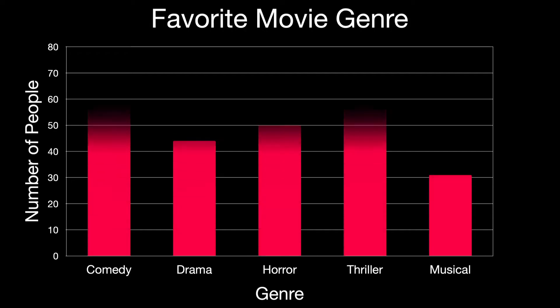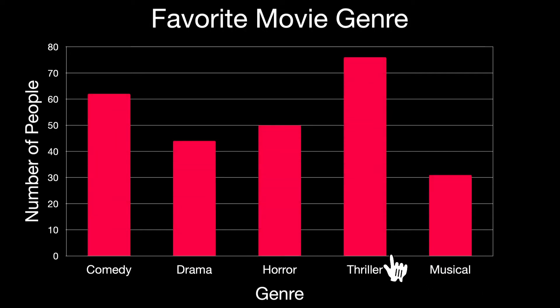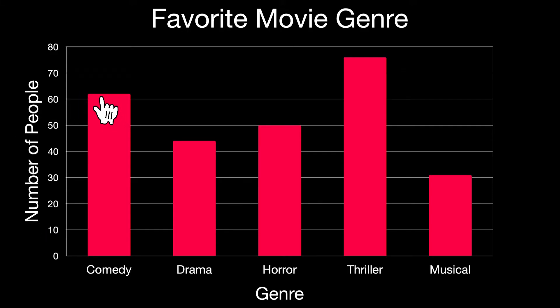Now what about a bar graph? Bar graphs are good for organizing data into categories. In this case, you can see movie genres at the bottom — these are our categories. The height of the bar corresponds to the number of people, so just over sixty people picked comedy as their favorite movie genre. This is completely different than a time series graph because we're not tracking how something changes over time — we're looking at categories, and it's worth mentioning that these bars do not really need to touch because these are completely different categories.